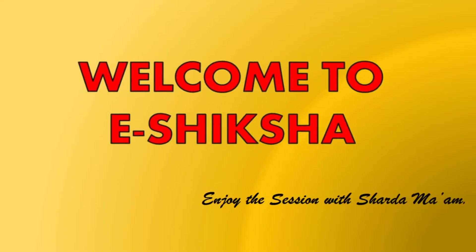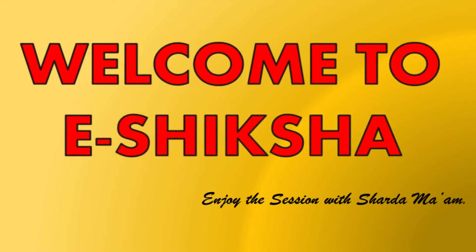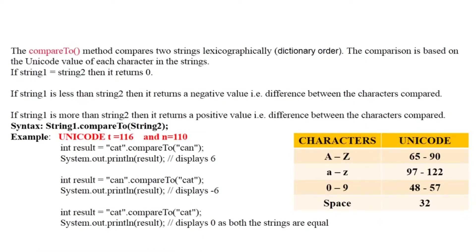Hello friends, welcome to another edition of Java learning. In today's session we are going to learn about the string compareTo function. The compareTo function compares two strings lexicographically, that is in dictionary order. The comparison is based on the Unicode value of each character. If string one and string two are the same, it will return zero. There are three possibilities: it will return zero, a positive number, or a negative number.